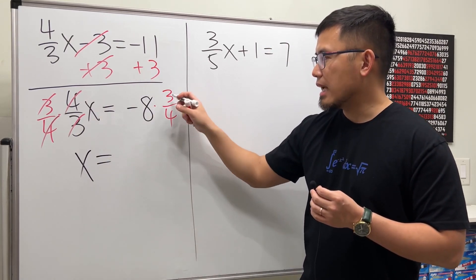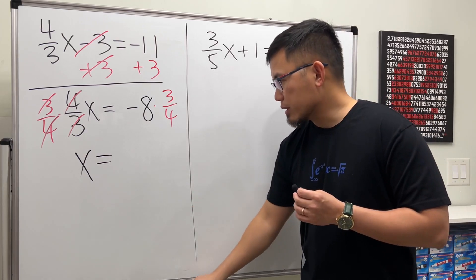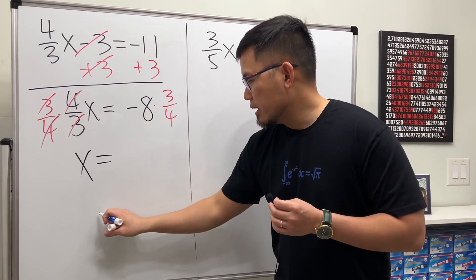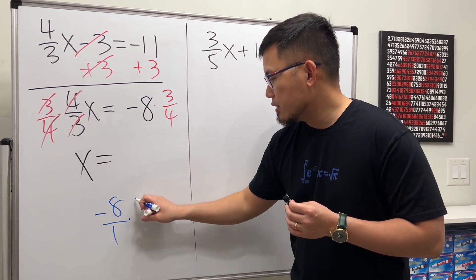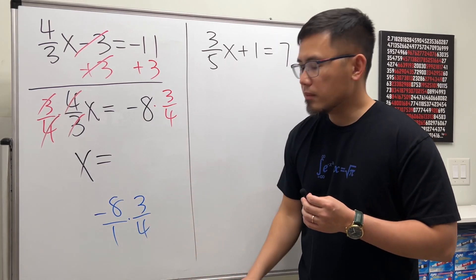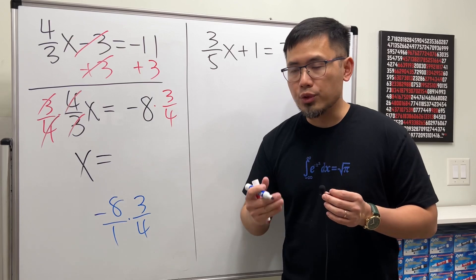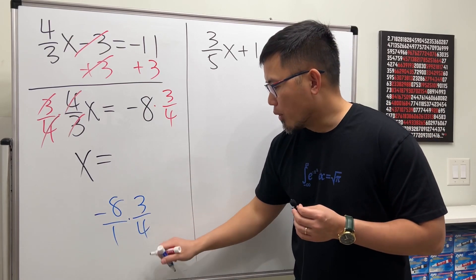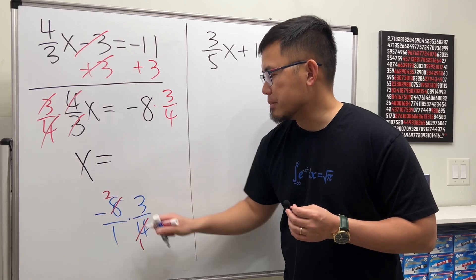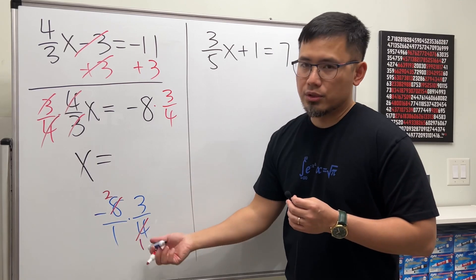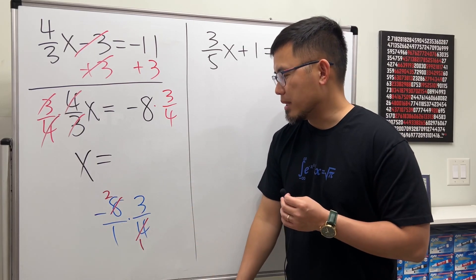And then this right here is negative 8 times 3/4. Let me work that out for you. Put negative 8 as negative 8/1, then times 3/4. Again, we can cross reduce 8 and 4: 4 goes into 4 one time, 4 goes into 8 two times. The bottom is just 1, so it doesn't matter anymore.